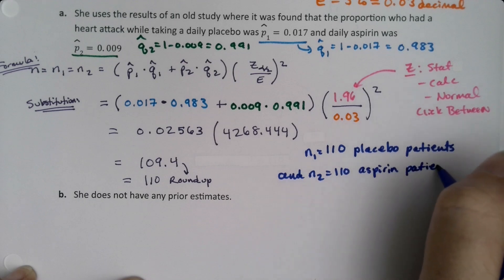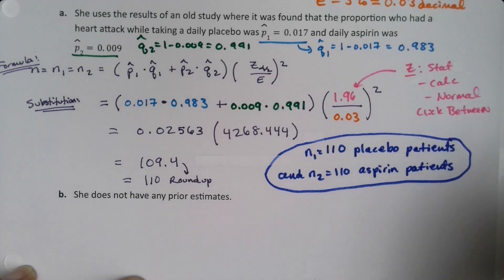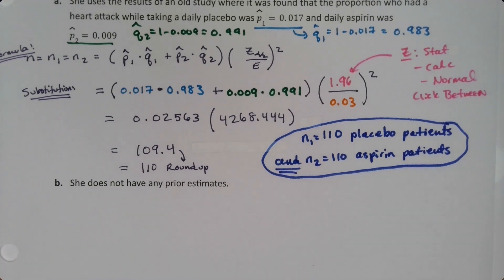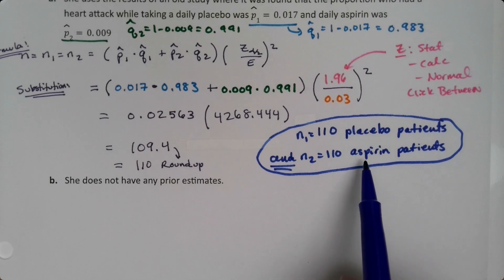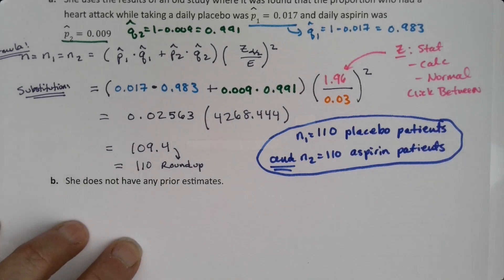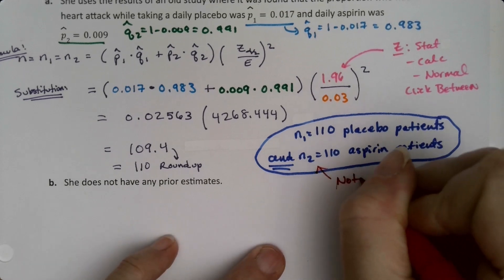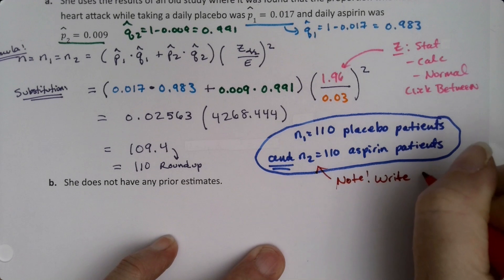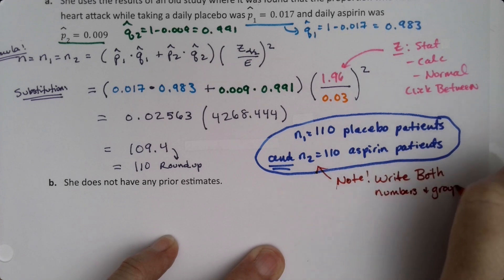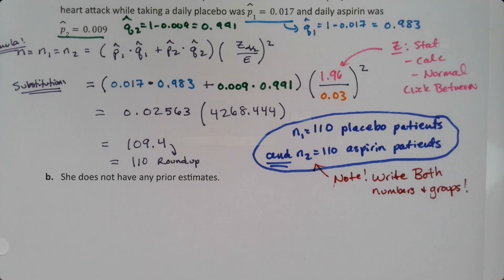And N2 is 110 aspirin patients. You need both. So technically, you kind of need 220, right? You need 220 because you need 110 for this group and 110 for that group. So you have to say both of them. You have to say it twice. You can't say 110 placebo and aspirin. Because that implies 55 for each. You have to say 110 placebo and 110 aspirin. You have to write both of them. I'll make a note. Don't just write. Don't get lazy. Don't write 110 placebo and aspirin. That's wrong. 110 placebo and 110 aspirin. You have to say both the numbers and the groups both times.